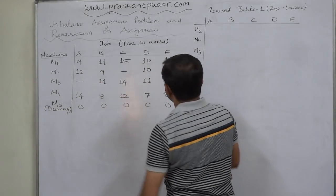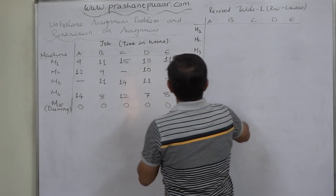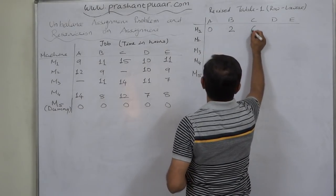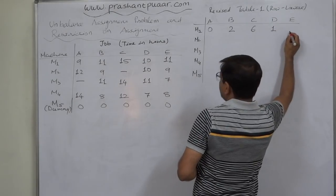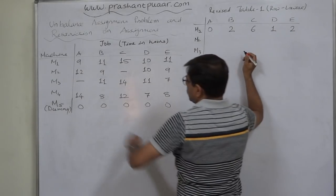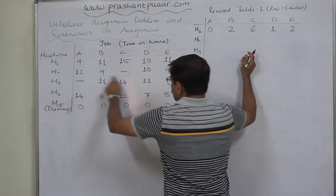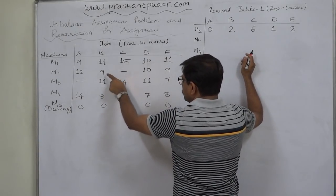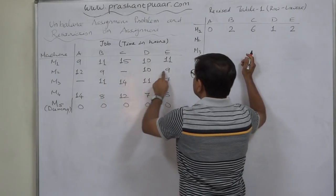In row M1, the lowest value is 9. So 9 minus 9, 0. 11 minus 9, 2. 15 minus 9, 6. 10 minus 9, 1. And 11 minus 9, 2. In row M2, this is not the lowest value. The lowest, because this is not a value. This is 9.